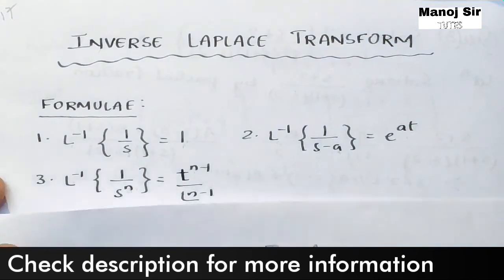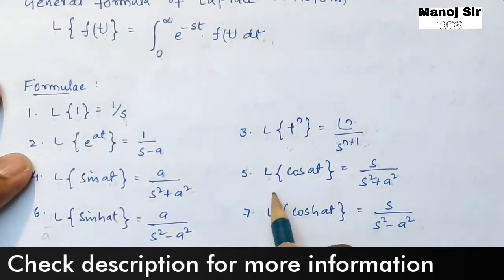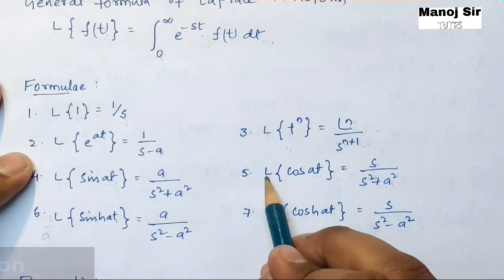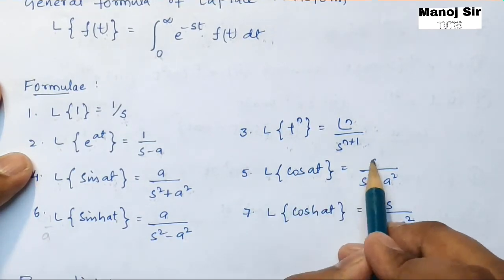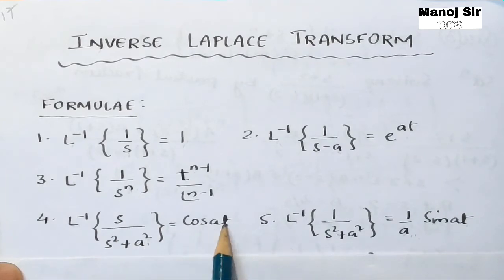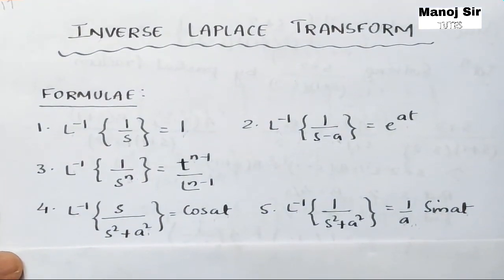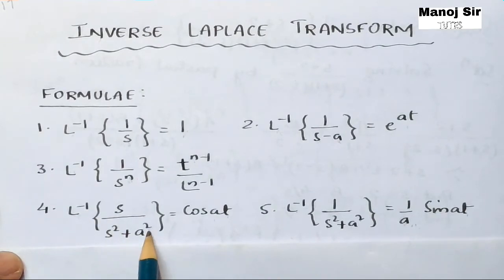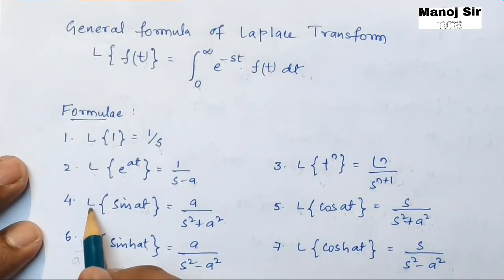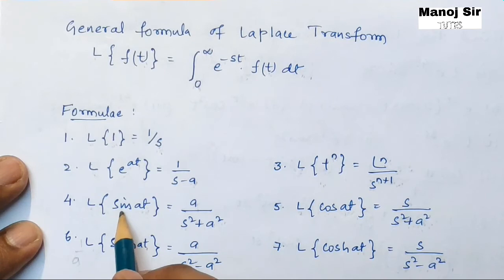Now coming to the fourth formula: Laplace transform of cos(at) equals s / (s² + a²). In the same way, inverse Laplace transform of s / (s² + a²) equals cos(at).